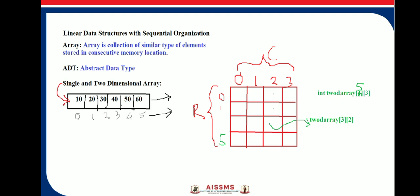Here, 0, 1, 2, 3, 4, 5 are the index locations of elements in a single-dimensional array.